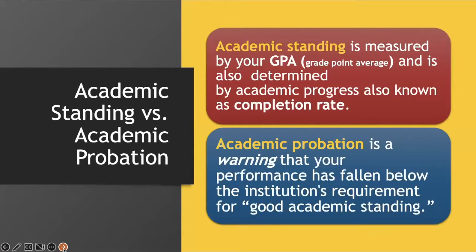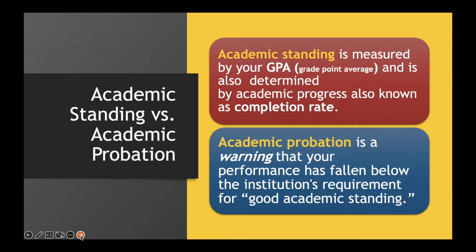What is academic standing versus academic probation? Academic standing is measured by your GPA or grade point average and is also determined by your academic progress, also known as your completion rate. Academic probation is a warning that your performance has fallen below the institution's requirement for good academic standing.